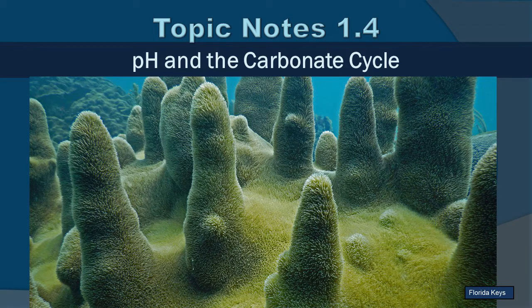Topic notes 1.4: pH and the carbonate cycle. This is an image of pillar coral found in the Keys. Coral has a skeletal system made out of calcium carbonate, and calcium carbonate is sensitive to pH. If it's a little too acidic, that can actually start to dissolve and weaken calcium carbonate structures. The ocean is actually a little bit basic, and that is the discussion we're going to have today — we're going to talk about pH, understand how it works, and apply it to the natural environment.